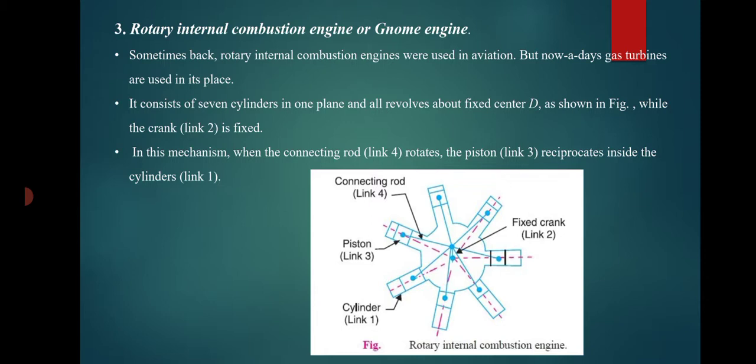In this mechanism, when the connecting rod — link 4 — rotates, the piston — link 3 — reciprocates inside the cylinder — link 1. Link 2 is the fixed link. So the connecting rod rotates and the piston, link 3, and connecting rod, link 4, cause the cylinders to also rotate.